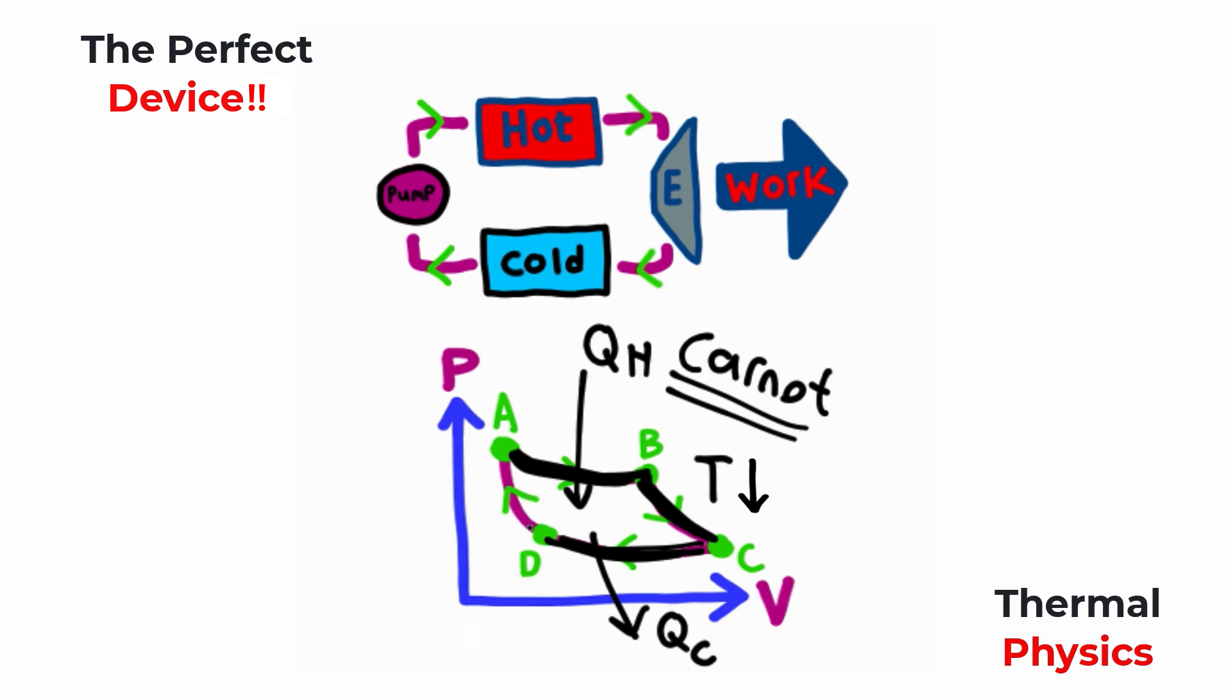Now, the last piece that we have is what's called an adiabatic compression. Once again, no heat is removed or added to the system. So basically, a way you can think about it is in these two transitions, the temperature does not change. And in these two transitions, the heat does not change.